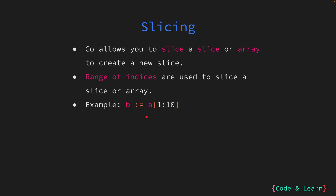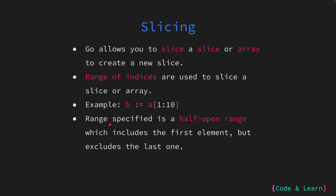Here is an example of a slice expression. In the example we are creating a slice b from slice a and copying values from index 1 to 9. That's because the range specified inside the square brackets is a half-open range, which includes the first element but excludes the last element — index 10. So b will have values from index 1, 2, 3, 4, 5, 6, 7, 8, 9 but not 10.